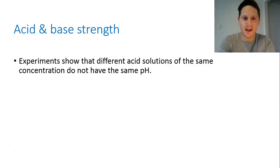Experiments show that different acid solutions of the same concentration do not have the same pH. Now remember the pH scale is from 0 to 14, 7 being neutral, less than 7 is acidic, greater than 7 is basic. Now it's a log 10 scale, so what that means is a substance that has a pH of 2 is 10 times more acidic than a substance that has a pH of 3.